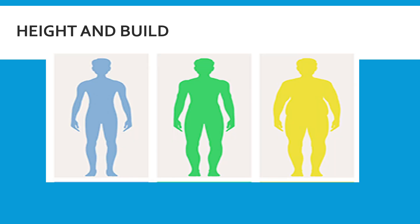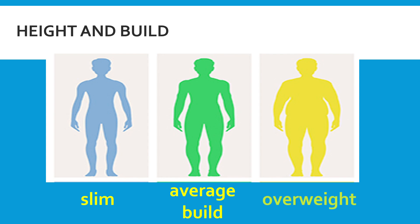From the aspect of build, there are three different figures. The figure in blue can be described as 'slim.' For the figure in green, we use 'average build.' For the figure in yellow, which is slightly bigger than average, the proper word is 'overweight.'